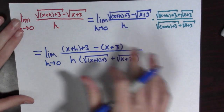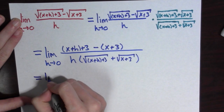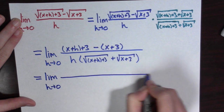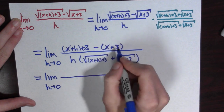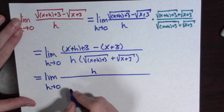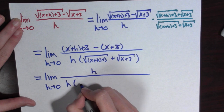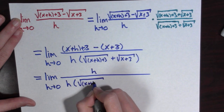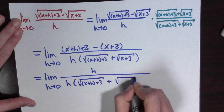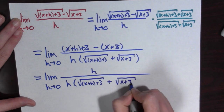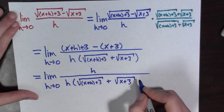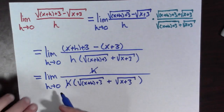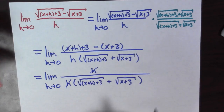We simplify the numerator. We get the limit as h goes to 0. The x's are going to cancel and the 3's are going to cancel, giving us h over h times the square root of x plus h plus 3, plus the square root of x plus 3. The h's will cancel because we're taking the limit as h goes to 0, which means h is not equal to 0.